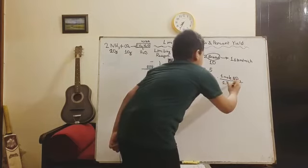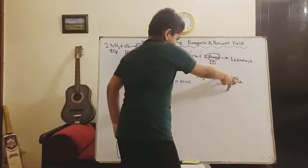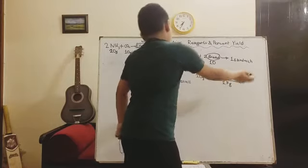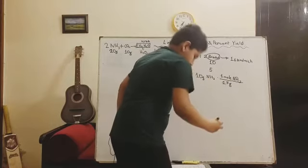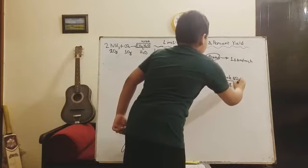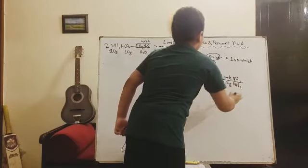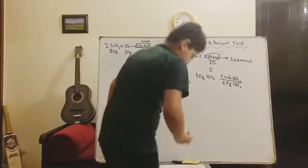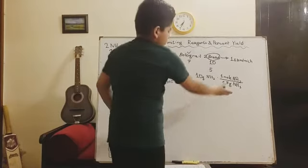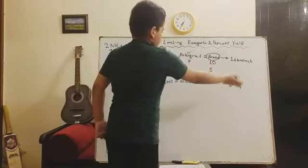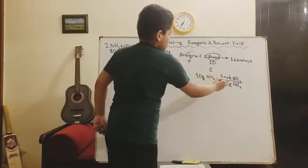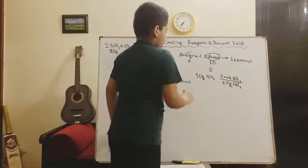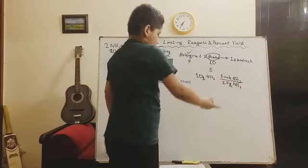Remember when we cancel out values and make fractions, we have to make sure that the fraction will be equal to 1 so that our value doesn't change. We don't want the value to change, we want the unit to change. So 17 grams of ammonia would be one mole of ammonia. This will cancel out all the grams, leaving 0.588 moles of ammonia.